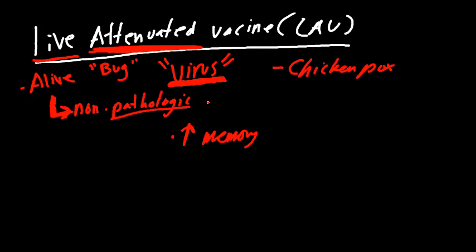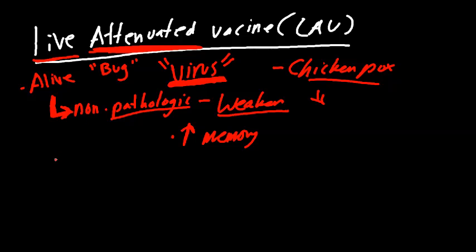This first initial exposure isn't going to cause the same problems as a non-vaccinated person would experience. It's going to be non-pathologic — the virus is going to be weakened. It will still grow within the body; however, using our example of chicken pox, the chicken pox virus cannot mediate its toxic effects. It's missing its factors that make it pathologic, missing its factors that cause symptoms.